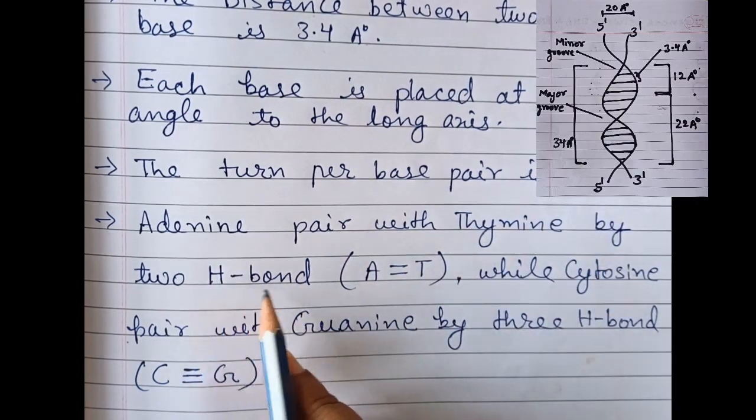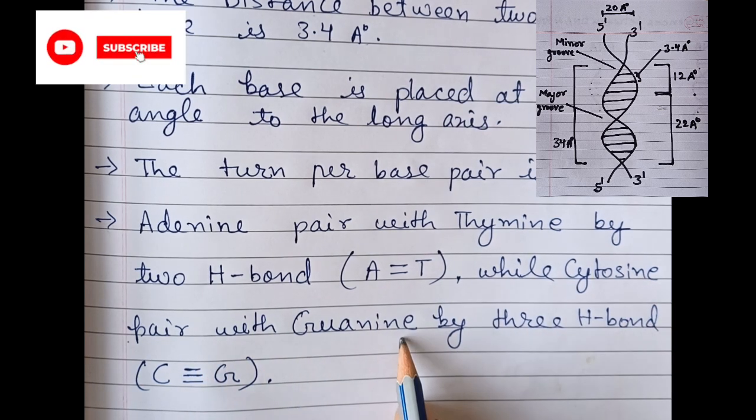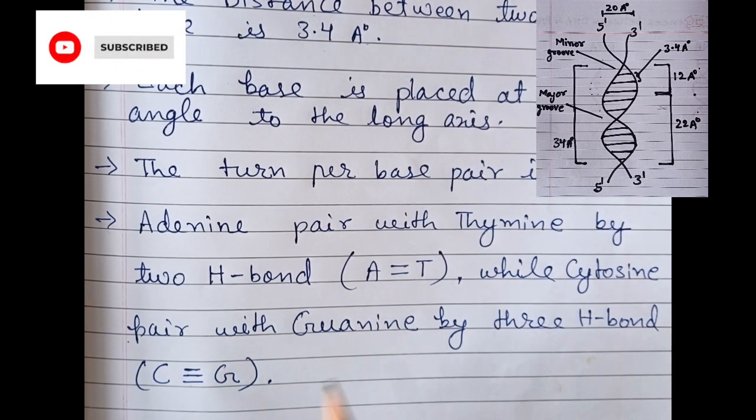Adenine pairs with thymine by 2 hydrogen bonds, while cytosine pairs with guanine by 3 hydrogen bonds.